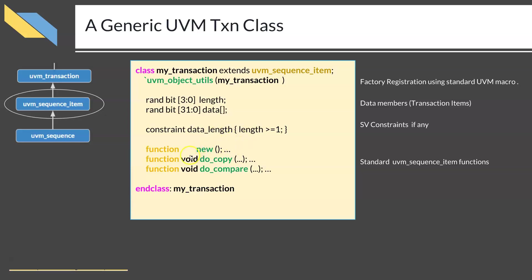After adding constraints, you write the functions specific to the sequence item class in UVM. These include the standard SystemVerilog `new` constructor function, and also functions like `do_copy` and `do_compare`. In most cases you need to write implementations of `do_copy` and `do_compare` for transactions. These functions get called automatically when a copy function or compare function is called on any object of this transaction. This is the general outline of any UVM-specific transaction: it extends from UVM sequence item, has factory registration macros, member variables, constraints if any, and these function definitions.